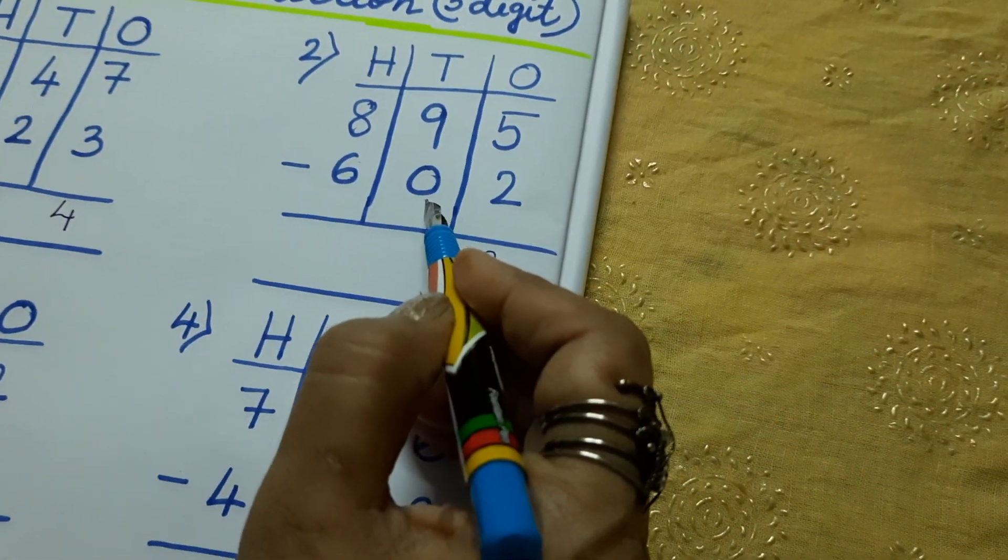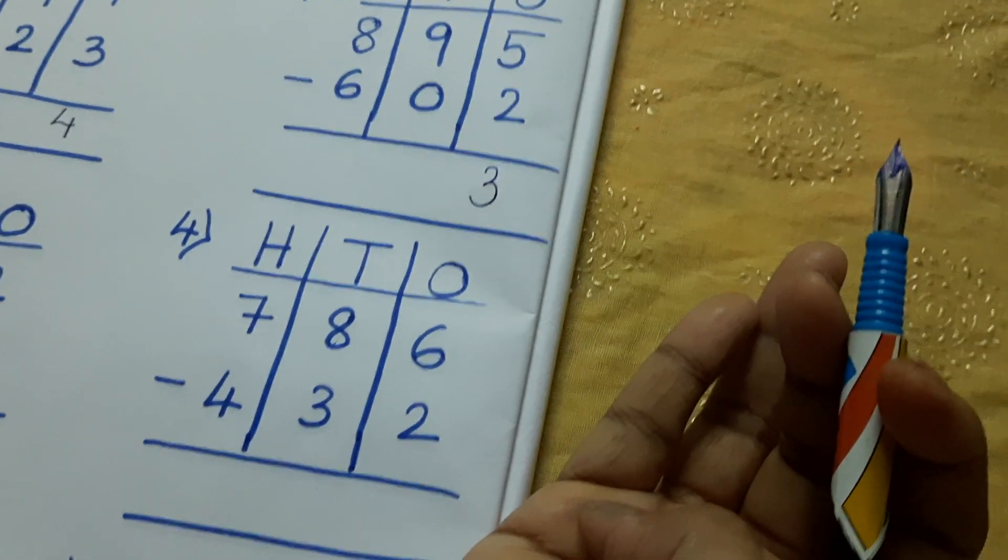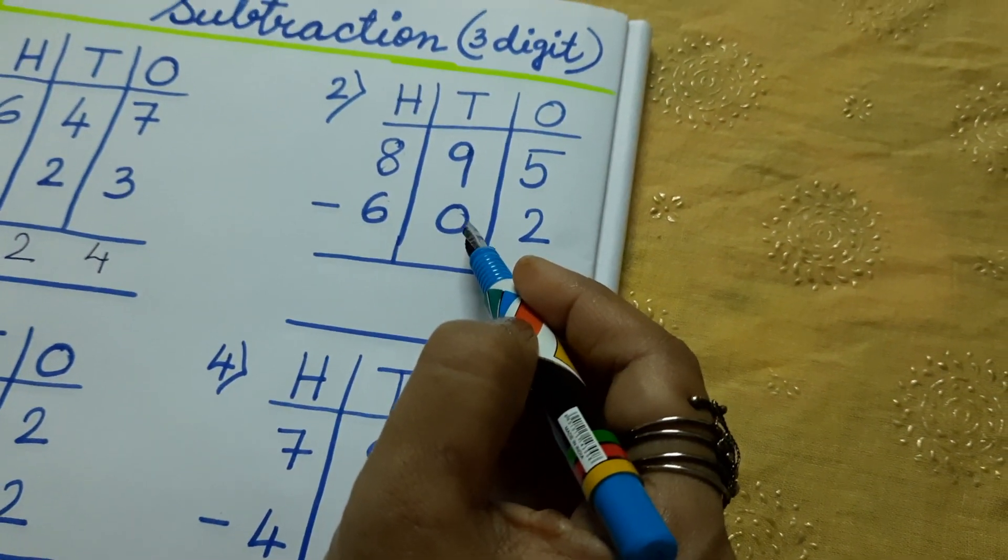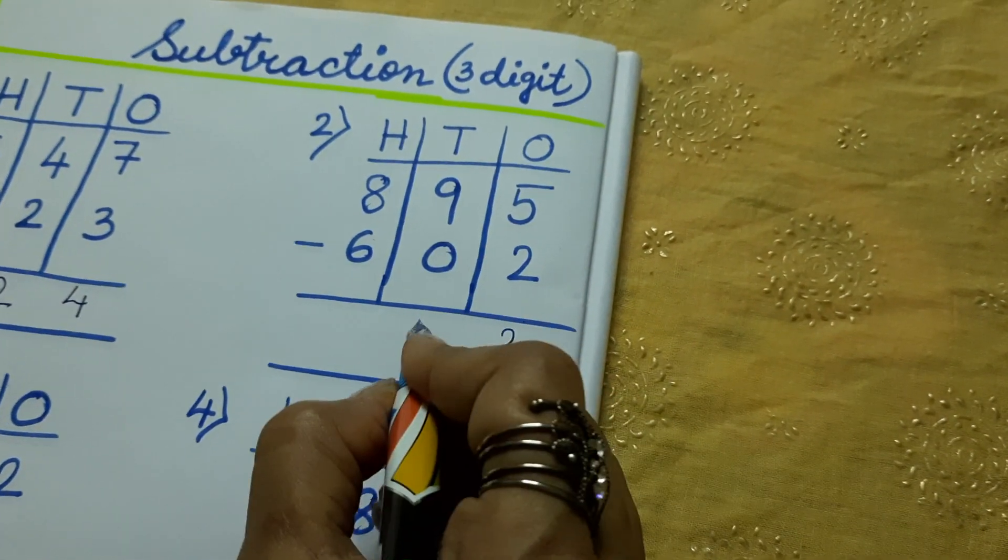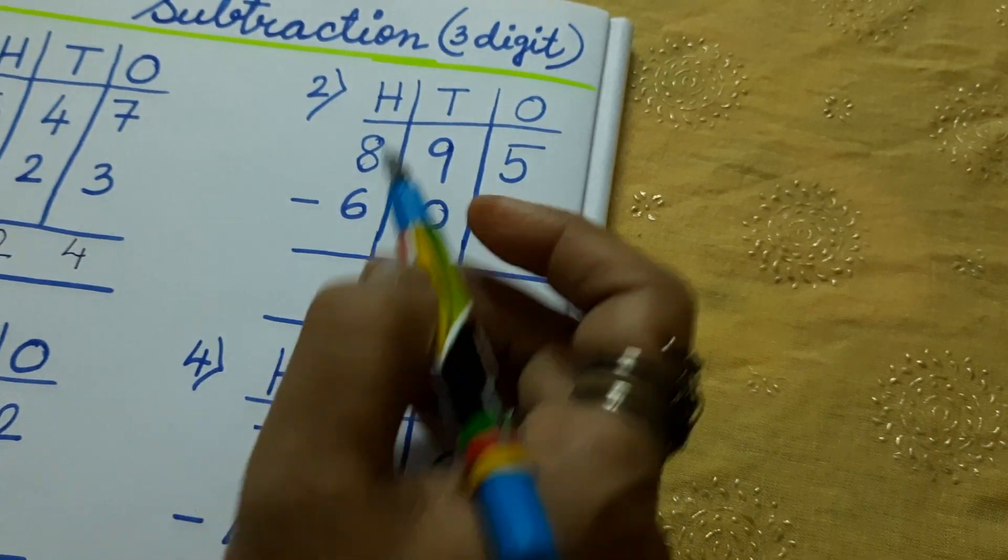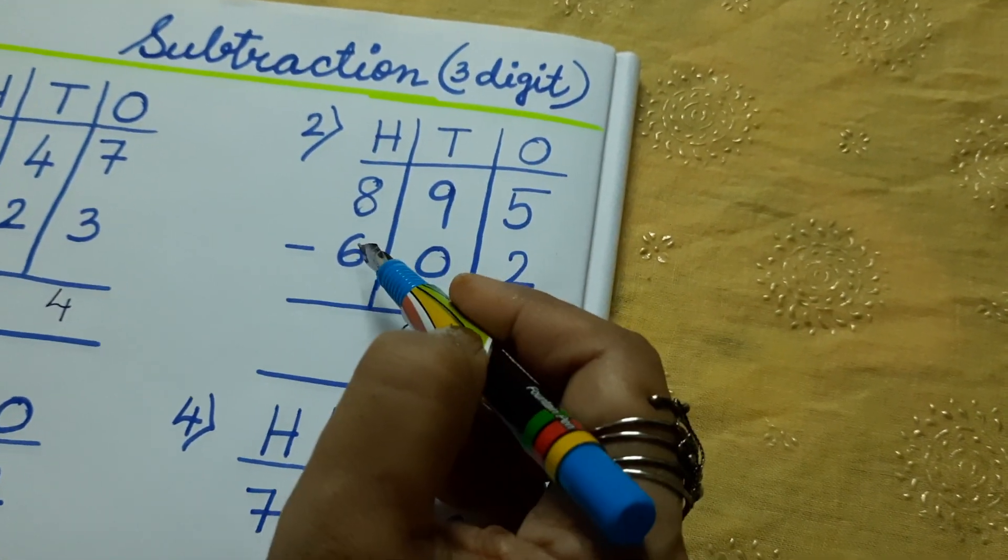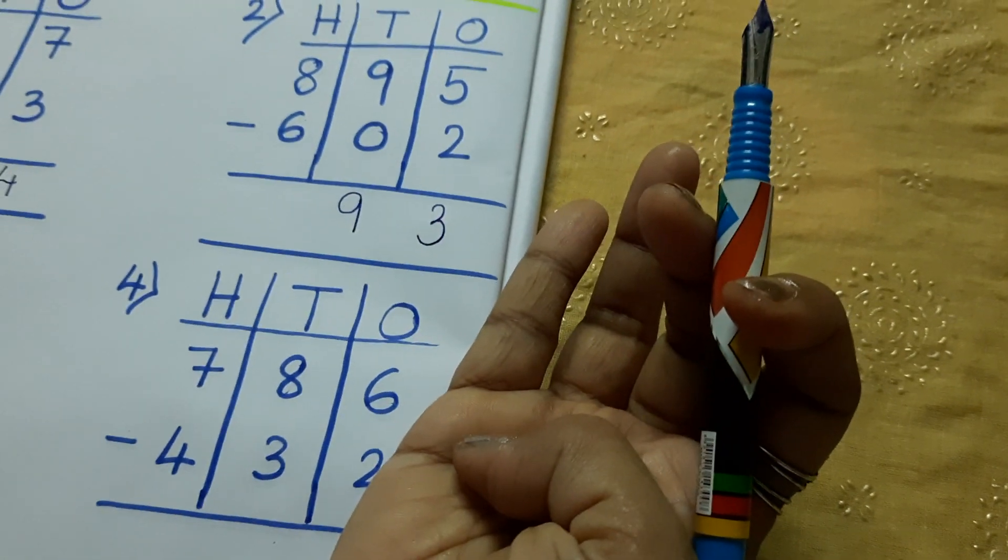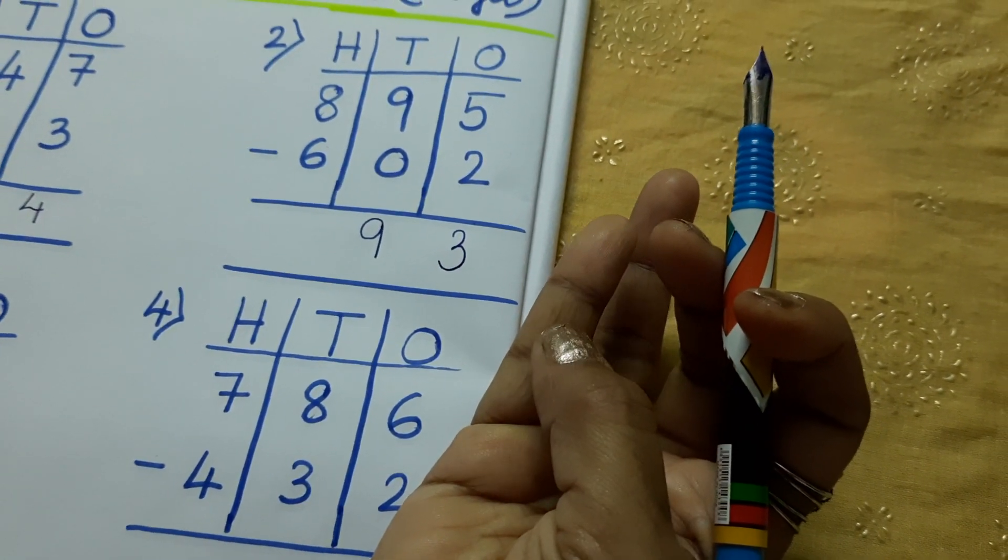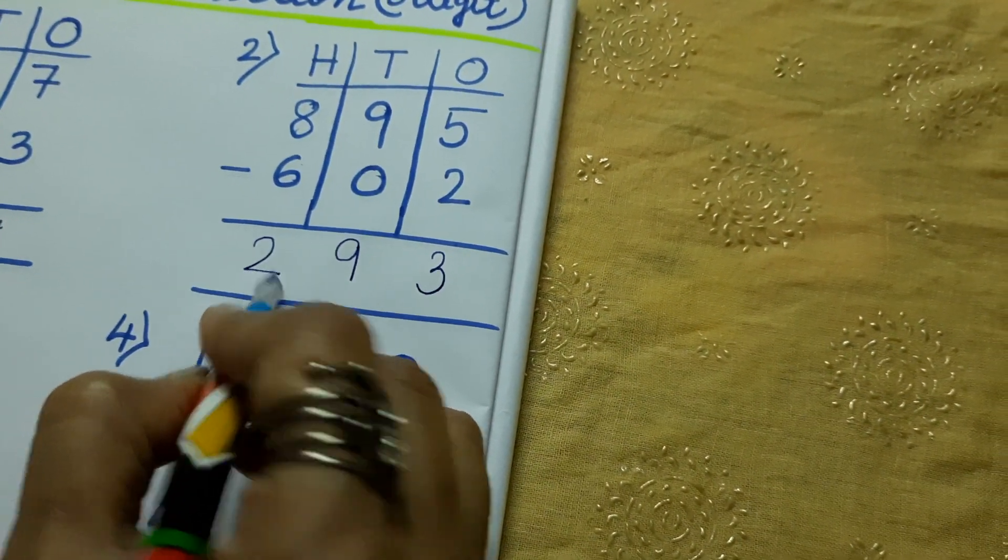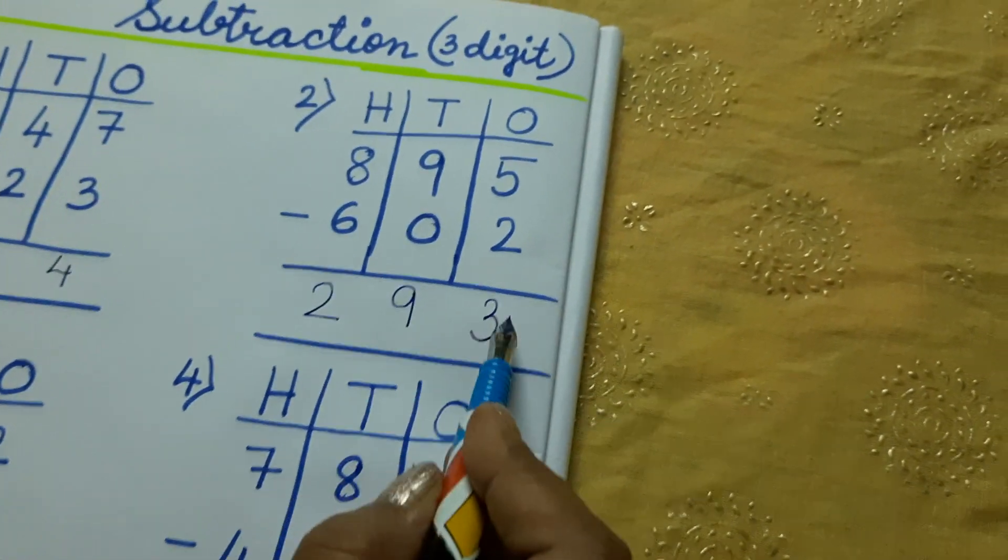9 minus 0. Shall I have to count? No. We know 9 minus 0. 0 has no value. So, the same number I am going to write. Next is 8 minus 6. So, 6 I will keep here. After 6, 7, 8. Answer is 2. So, 2, 9, 3.